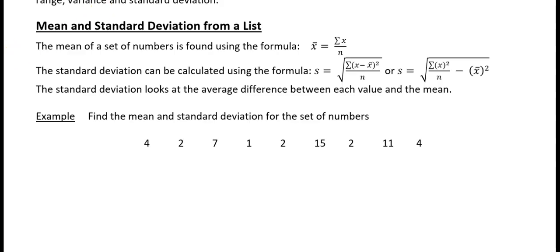The formula for the mean for a set of numbers is x bar is equal to sigma x over n. Now when you see sigma, sigma means the sum of, so the sum of all the x values, so all the data values divided by n, where n is a number of data values.